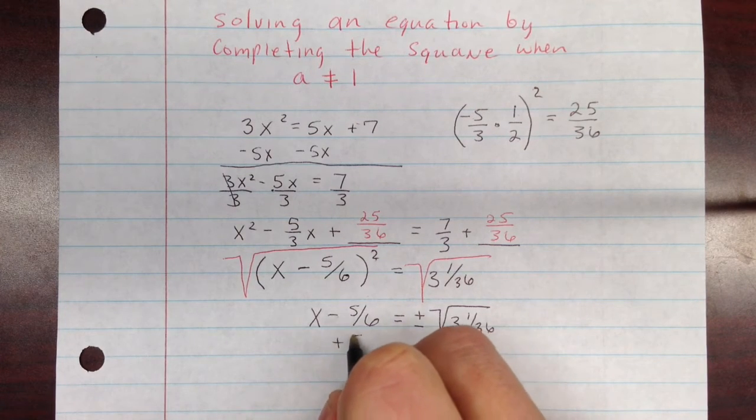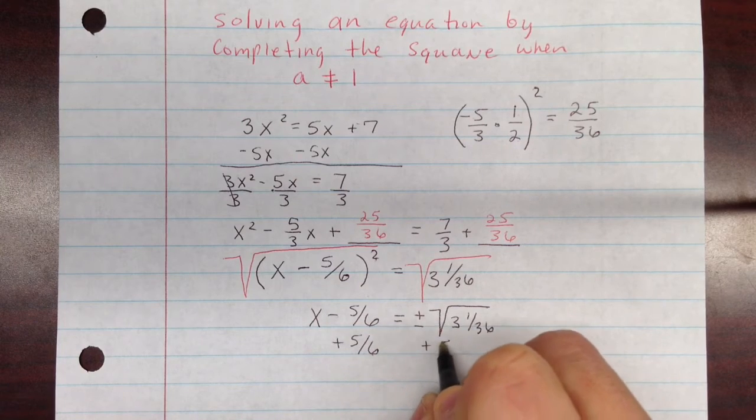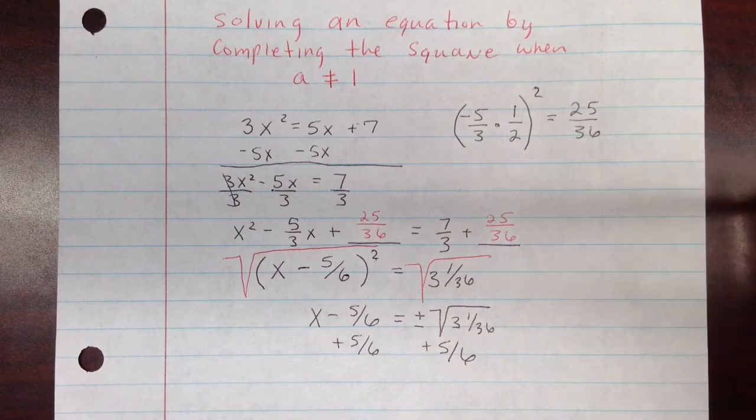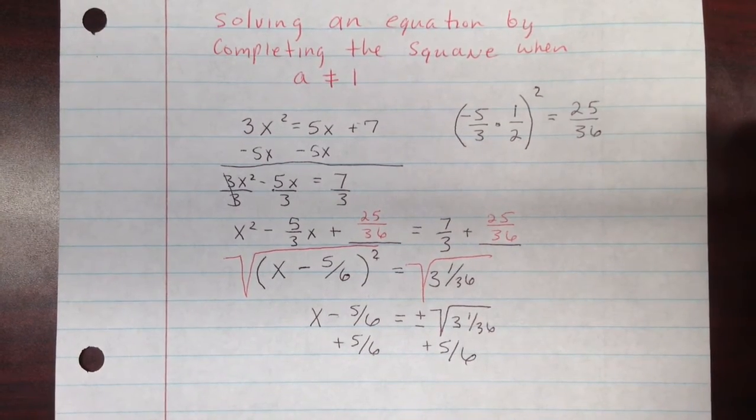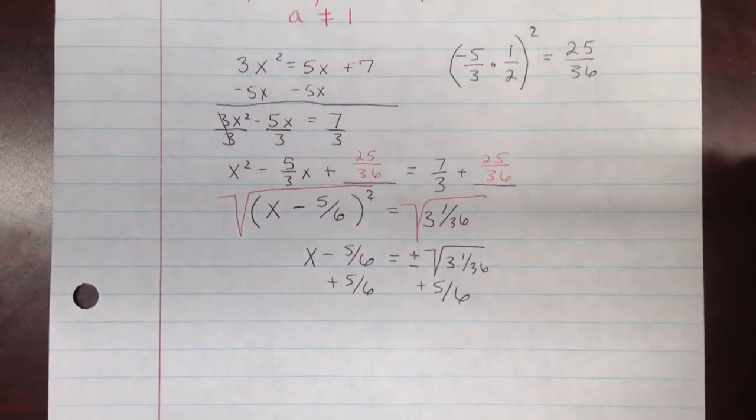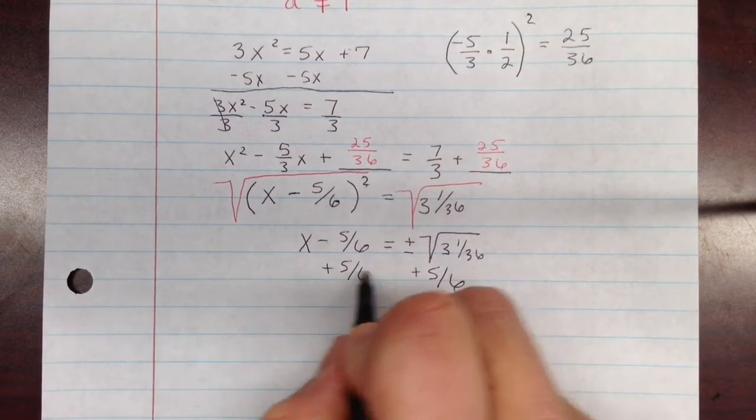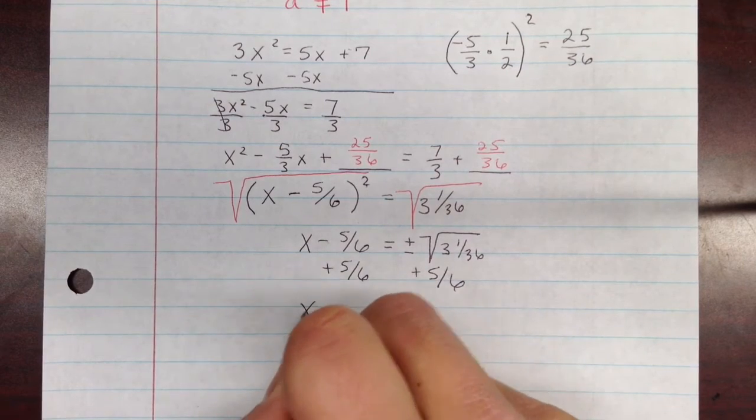Now we've got a couple more steps to do. We're going to add 5/6 to both sides. And now we're going to write out our two answers. So let me slide this down just a little bit so that we have a little more space here. And in adding this 5/6, it cancels here. So I get x equals.